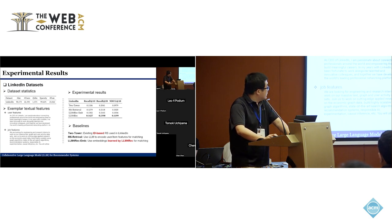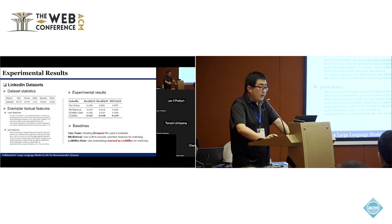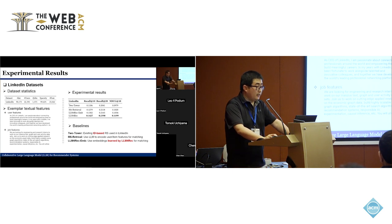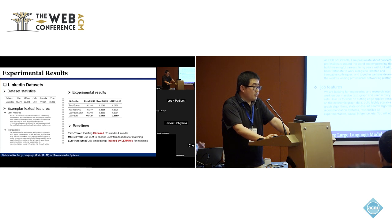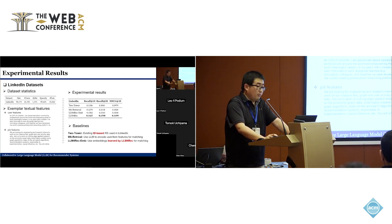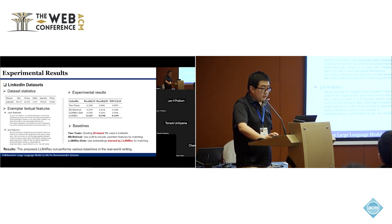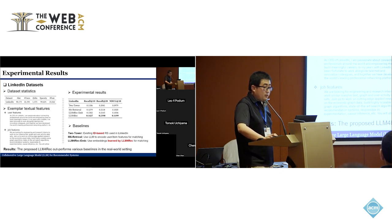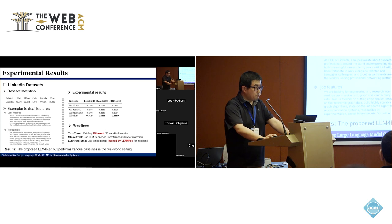We compare our method with the two-tower model — the model currently deployed in LinkedIn's job recommendation system — and also with M6 retrieval, which uses a large language model to encode user-item features for matching. We also compare a variant called LM for REC Embedding, which uses embeddings learned by our model for the matching stage. Our method greatly improves recommendation performance in this real-world situation.